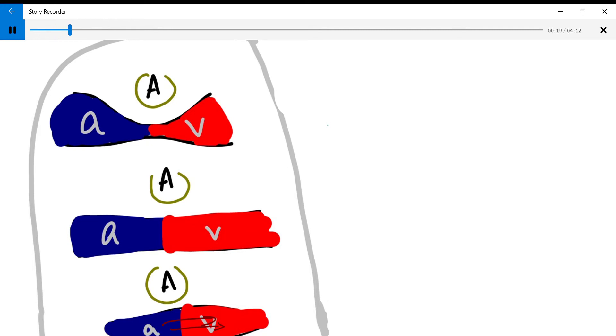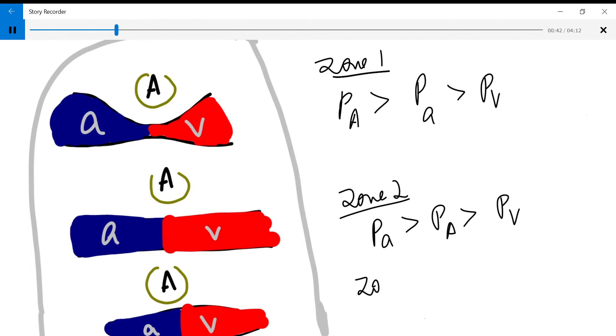In the top we have zone 1 in which the pressure is PA greater than pulmonary artery greater than pulmonary vein. In zone 2 we have pulmonary artery more than alveolus more than pulmonary vein, and in the third zone we have pulmonary artery greater than pulmonary vein greater than alveolus.